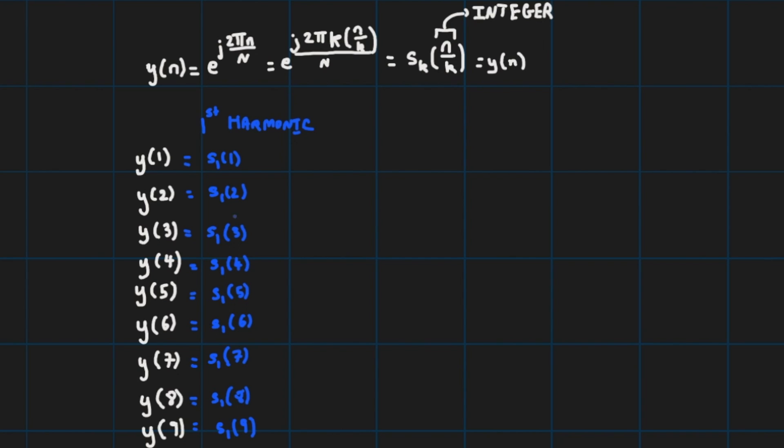Now okay that's good we can use this table to generate my first complex exponential harmonics. Now what about the second harmonics? So we start for s₂ it is n over 2 that is equal to y of n. So 1 over 2 is not defined so I cannot use y(1) however y(2) is defined so I can use it to generate my s₂(1).